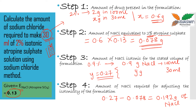To recap: in step 1, the formulation of atropine sulfate contains 0.6 grams of the drug, but that formulation alone need not be isotonic. In step 2, we calculated how much NaCl is required to make 30 ml an isotonic solution. Then we calculated what amount of NaCl is equivalent to 0.6 grams of the drug. The difference between step 2 and step 3 gives the actual amount of sodium chloride required to adjust the isotonicity of this 30 ml formulation.